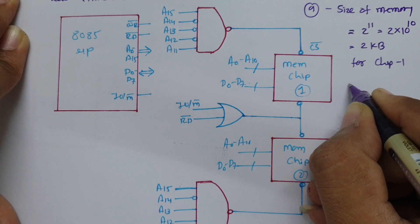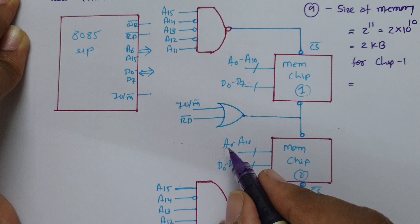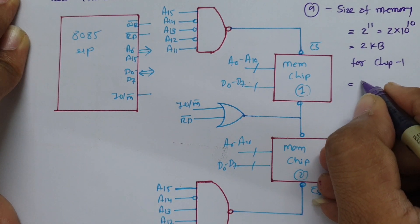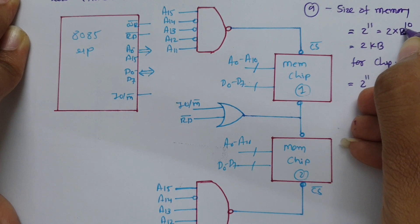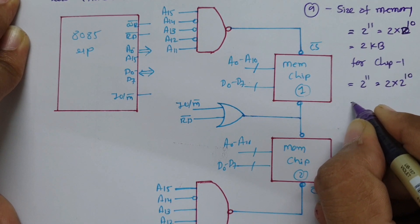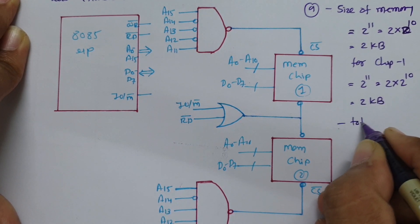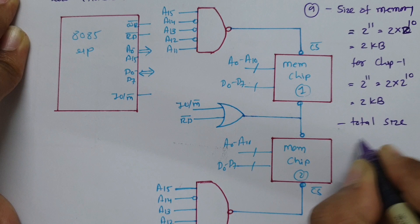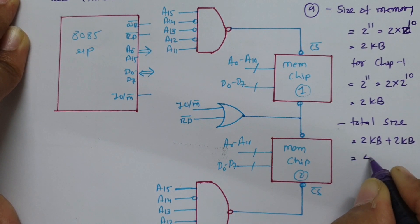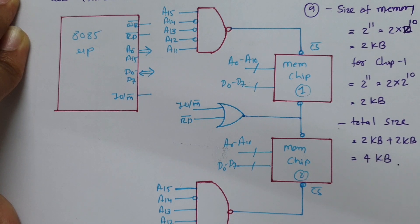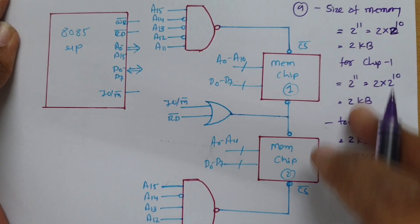Similarly, for chip 2 we have address lines from A0 to A10, which is also 2 to the power 11, meaning 2 KB. So the total size is 2 KB plus 2 KB equals 4 KB. The answer to question one is 4 KB total memory size.